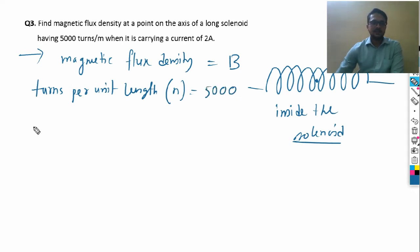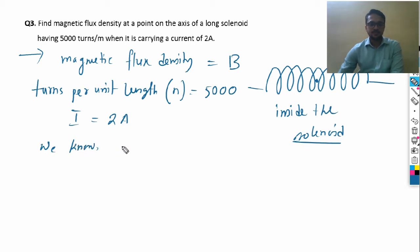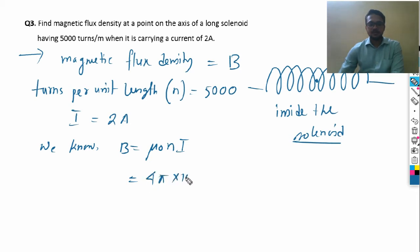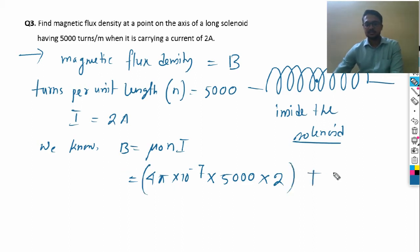The current is given as I = 2 ampere. Directly write the formula: B = μ₀nI. Substituting values: μ₀ = 4π × 10⁻⁷, n = 5000, I = 2 ampere. The unit is tesla.